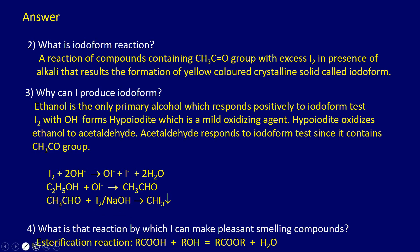Acetaldehyde contains the CH3CO group, so it responds to the iodoform test and gives iodoform when treated with excess iodine in the presence of alkali. Now the last question: what is that reaction by which I can make pleasant smelling compounds? This is the esterification reaction. Esters are formed by the reaction between an acid and an alcohol — the OH group of the acid and the hydrogen of the alcohol are removed as water and the remaining ester is formed. These esters are pleasant smelling compounds. So this was the riddle number 2.